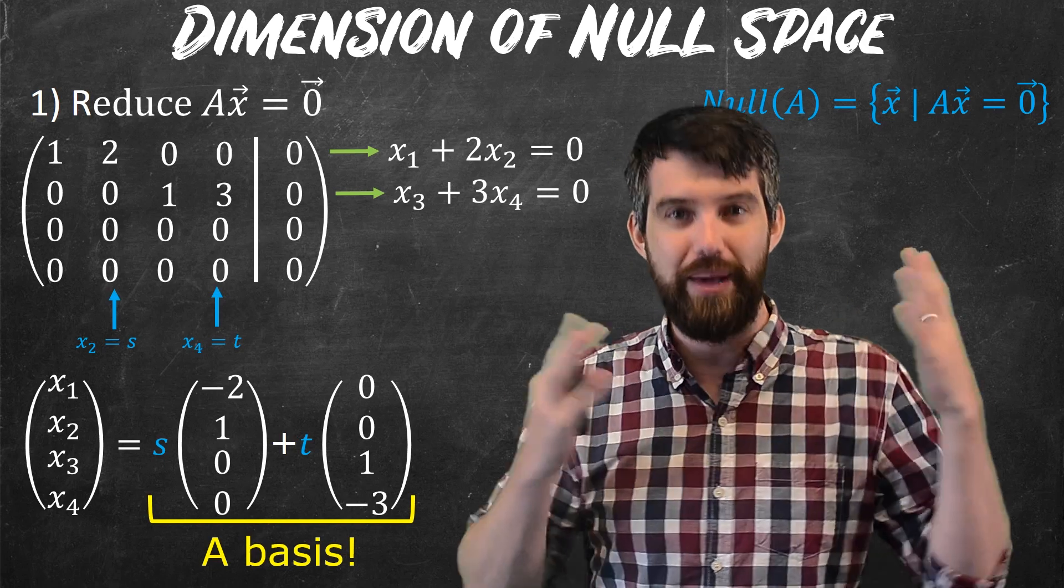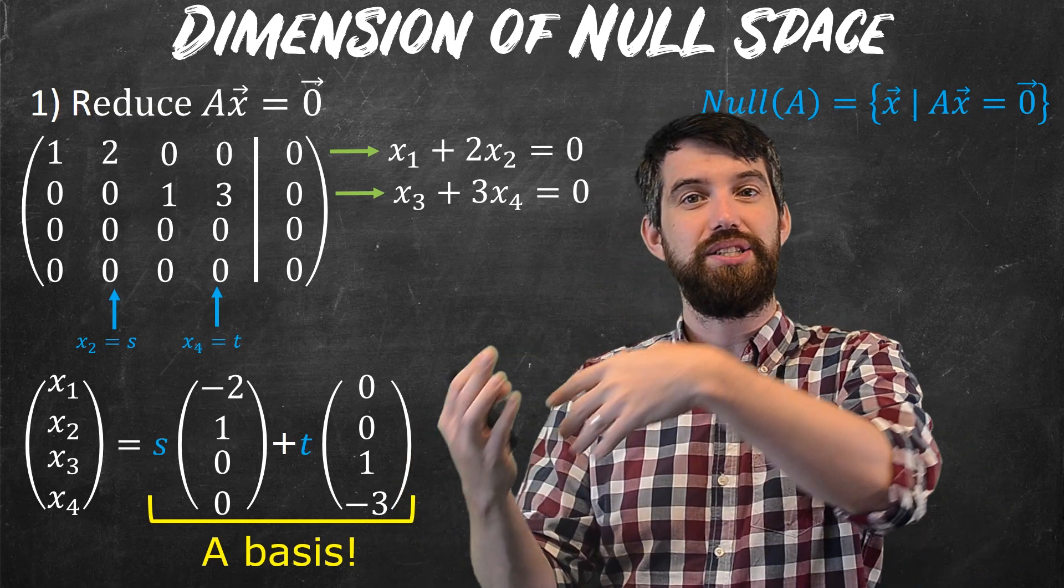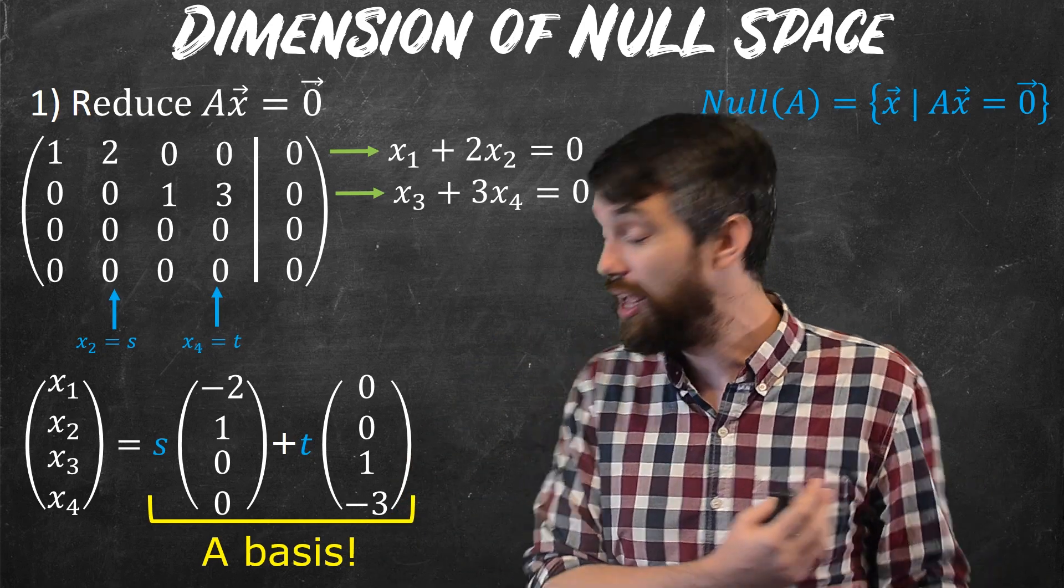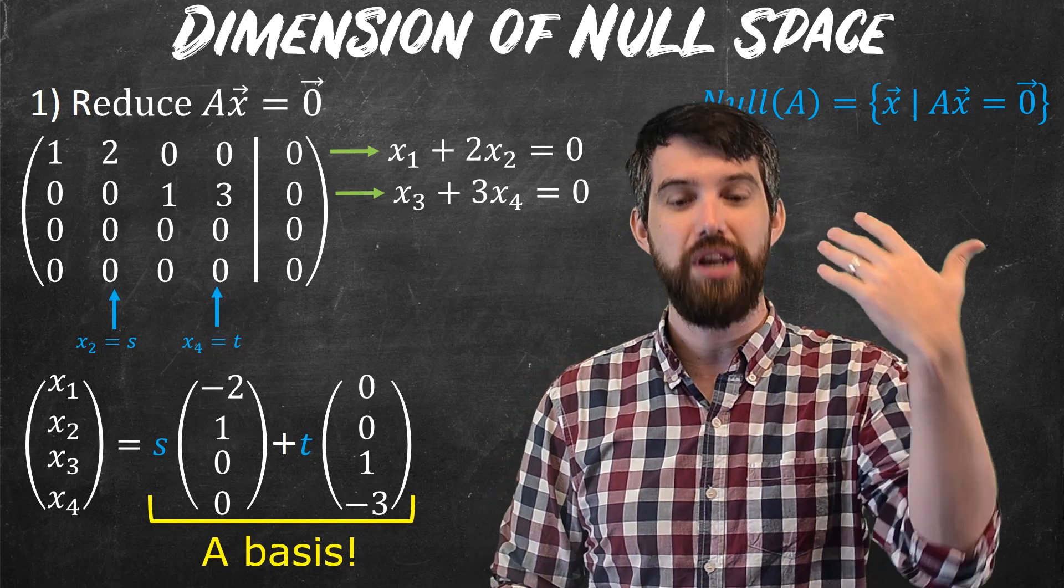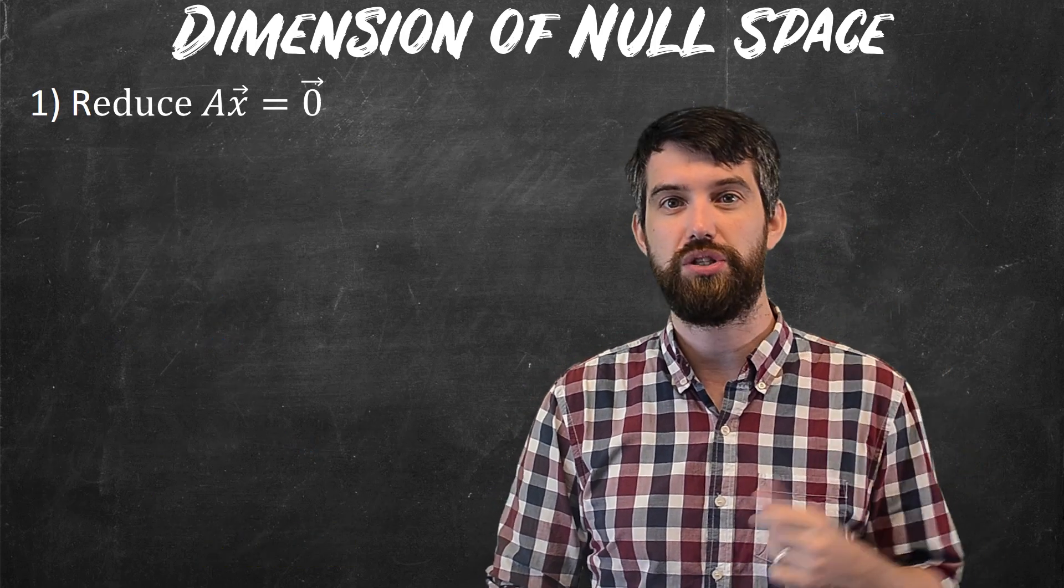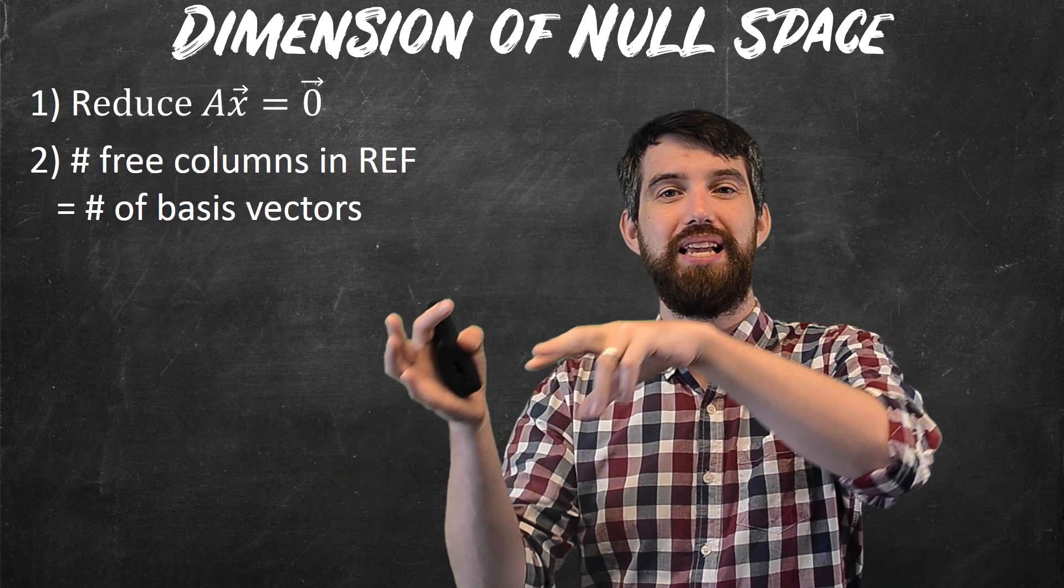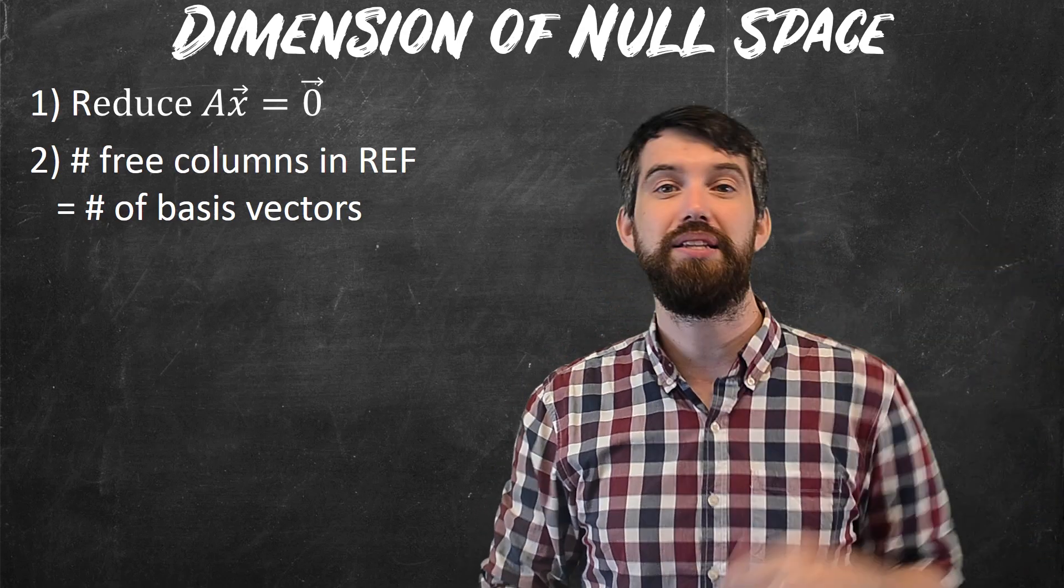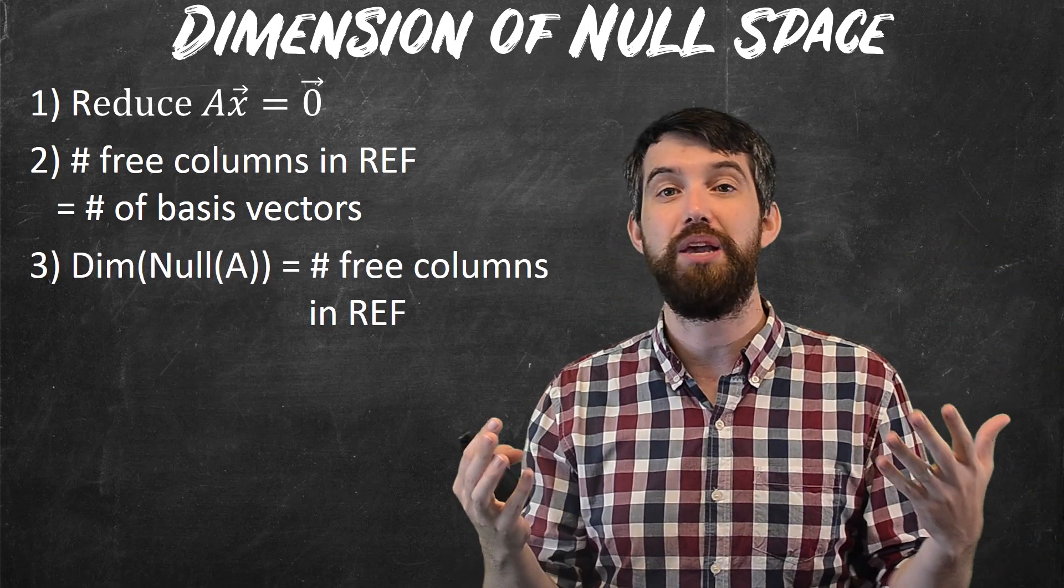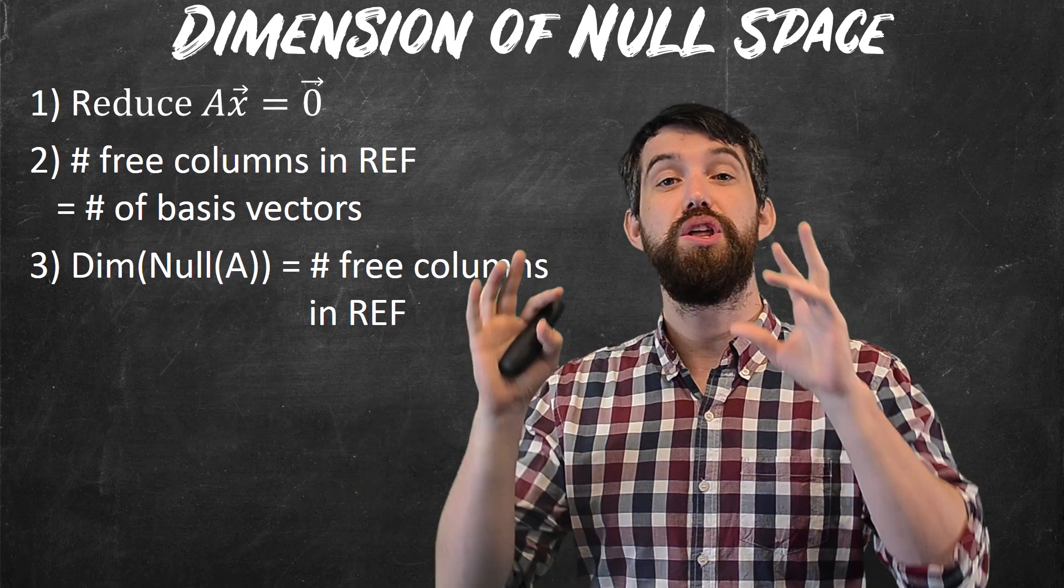So in this case, I've got a basis. It's got two different vectors in it. And since the dimension is going to simply be the number of basis vectors, the dimension of null space is going to be two here. So my steps are number one, to reduce the matrix as we just saw. Number two, to note that the number of free variables is the same thing as the number of basis vectors. And then we can say that the dimension of the null space is just going to be whatever the number of free variables is going to be. So that's dimension of the null space.